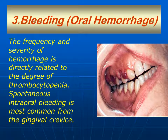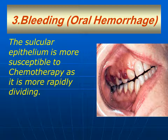The third manifestation of chemotherapy is bleeding, or oral hemorrhage. The frequency and severity of hemorrhage is directly related to the degree of thrombocytopenia. Spontaneous intraoral bleeding is most common from the area of the gingival crevice. The sulcular epithelium is more susceptible to the effects of chemotherapy because it is more rapidly dividing, and as stated before, chemotherapy affects more rapidly dividing cells more than normal cells.